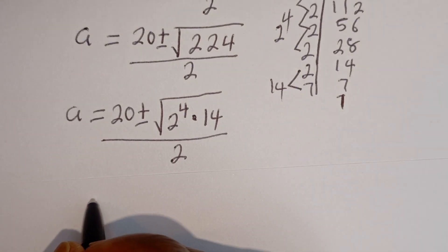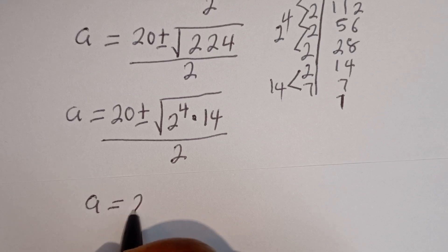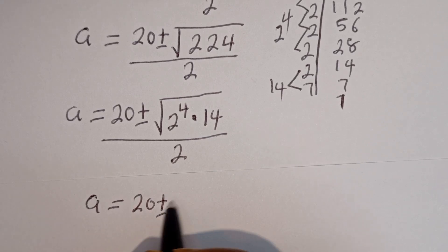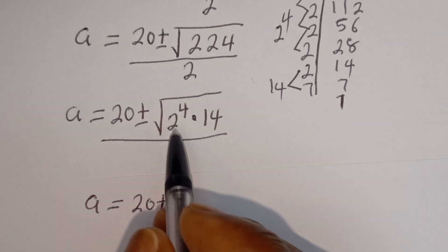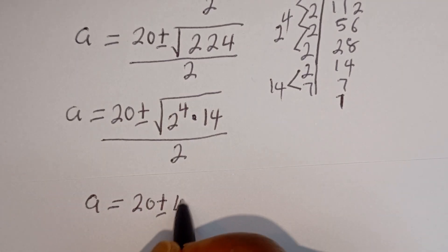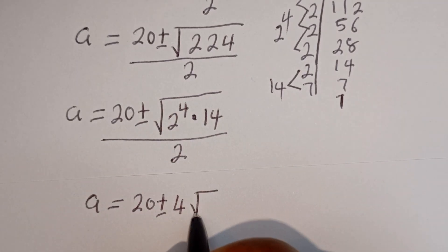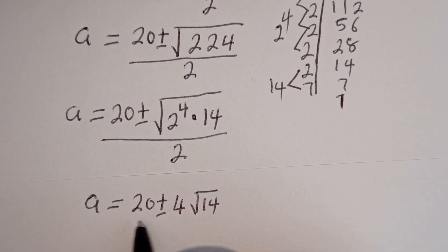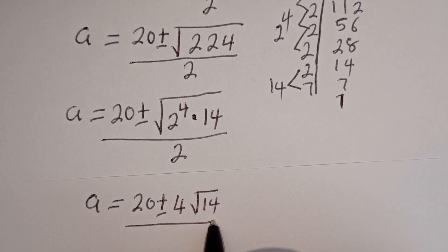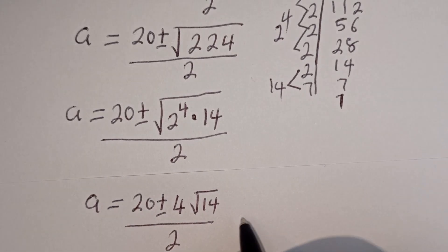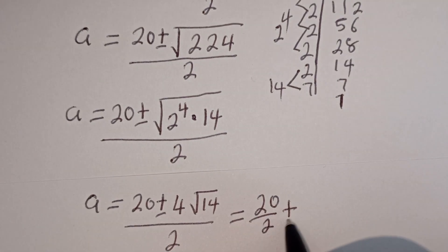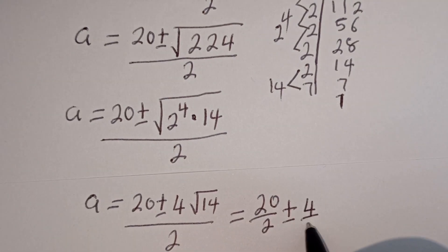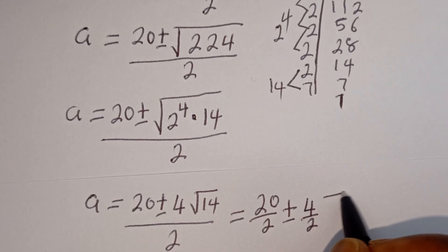Then we have a is equal to 20 plus or minus the square root of 2 to the power of 4 multiplied by 14, divided by 2. The square root of 2 to the power of 4 is 4, so this becomes 20 plus or minus 4 root 14, divided by 2, which equals 10 plus or minus 2 root 14.